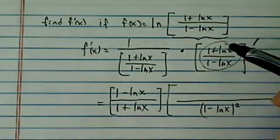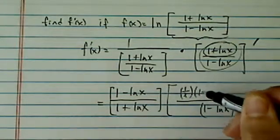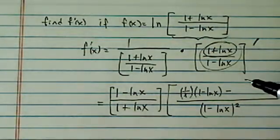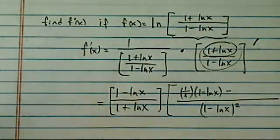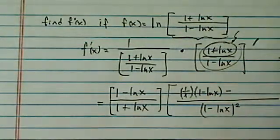Now quotient rule is that take a derivative of the top, which we know it's 1 over x. Leave the bottom one alone. Minus, now this is important because it's a minus sign. If it's an adding sign like product rule, then we don't really care. But since it's a minus, we do have to take derivative of the top first.